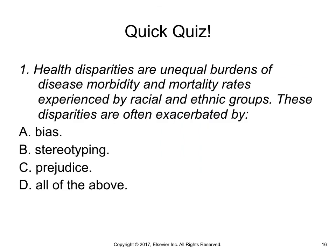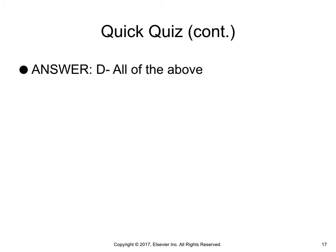Time for a quick quiz. Health disparities are unequal burdens of disease, morbidity, and mortality rates experienced by racial and ethnic groups. These disparities are often exacerbated by: A. Bias, B. Stereotyping, C. Prejudice, or D. All of the above. The answer is D, all of the above.